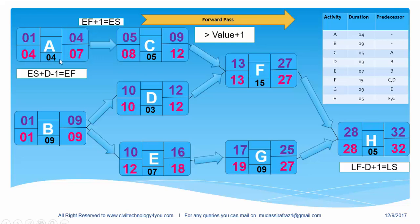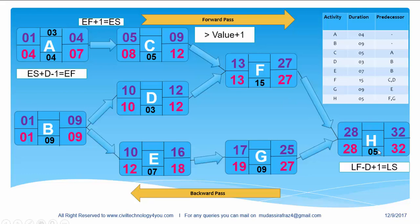So the process we did here is called backward pass, in which we define the late start and late finish of the activities. So I hope you understand forward pass and backward pass. Now look closely — this activity we can start between these two dates, from 1 to 4, and it will not affect the whole project duration. The difference between early start and late start, or early finish and late finish, is called float. So here float is 3 days — we can delay this activity for 3 days and it will not affect the whole project duration.